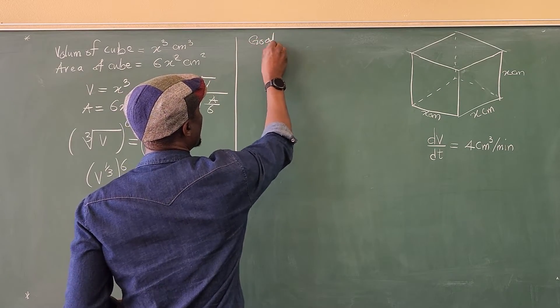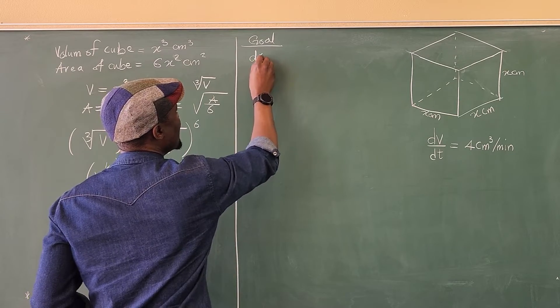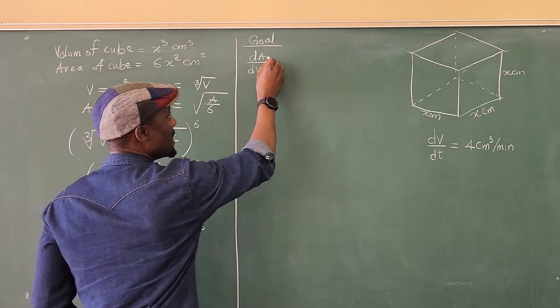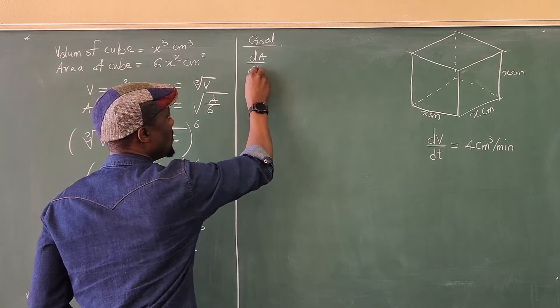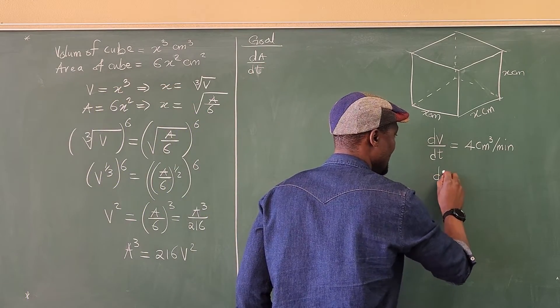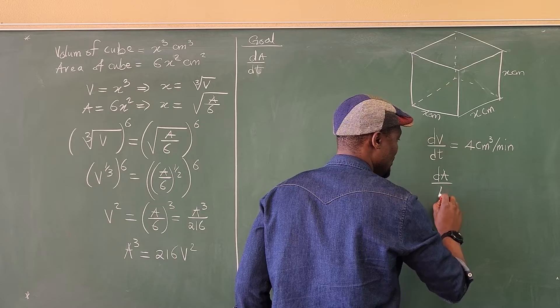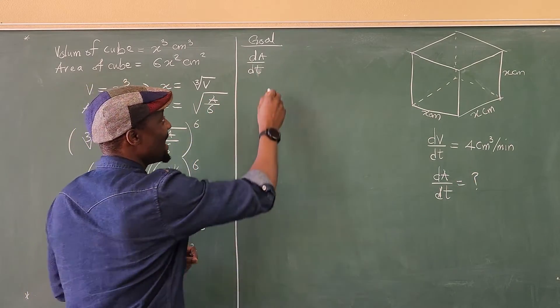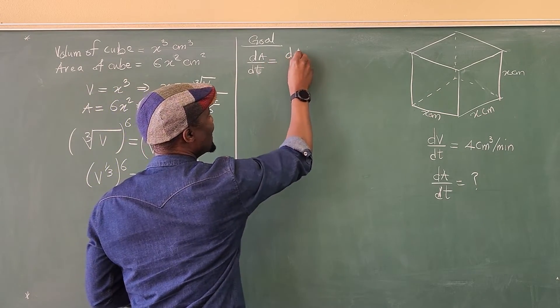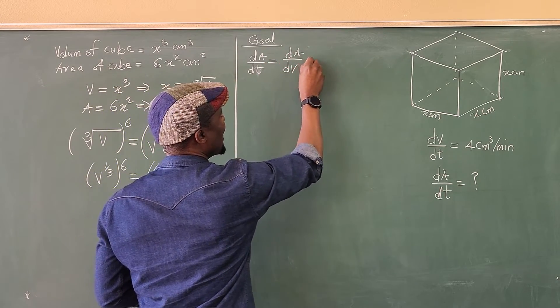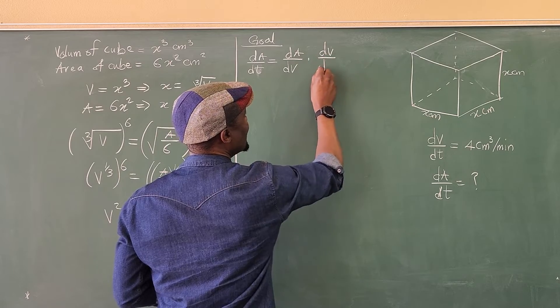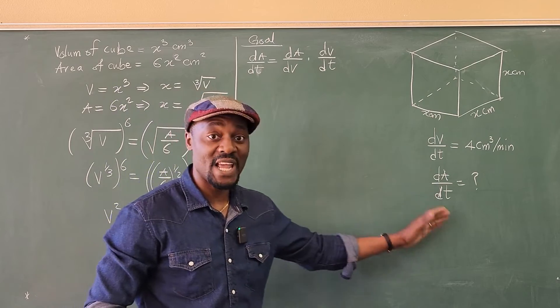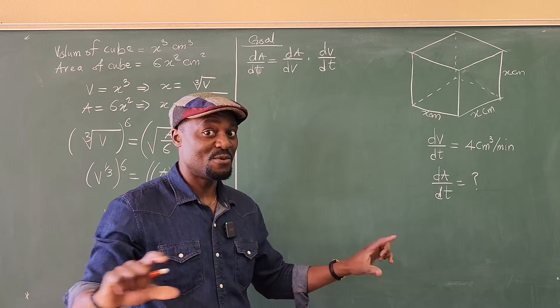Our goal is to say that dA/dV or dT rather, which is what we're looking for. We're looking for dA/dT, the rate at which the area is changing. dA/dT, we don't know. But we know that dA/dT is equal to dA/dV times dV/dT. This is a universal thing you want to always do whenever you do related rate. Relate the rate.